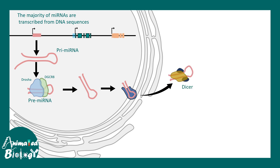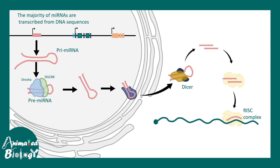Once outside in the cytoplasm, the pre-micro-RNA is assembled with proteins known as DICER. DICER chops off the loop structure at the end, leaving two strands of micro-RNA. These strands become associated with Argonaute proteins and eventually form the RISC complex, or RNAi silencing complex. Only one strand is loaded into RISC, which then binds to specific regions of the mRNA, leading in most cases to degradation of the mRNA.